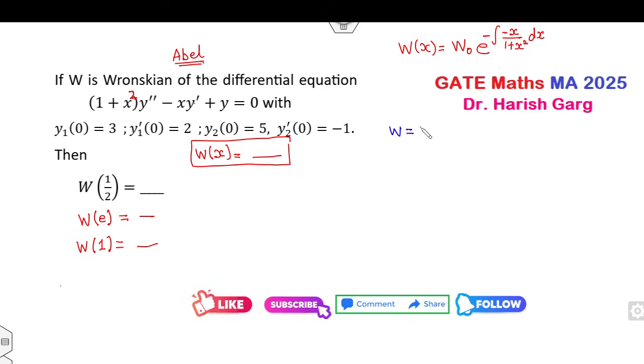So the answer of this problem is w0 e raised to power x divided by 1 plus x square. So I can multiply 2 and divide it by 2. So it will be half ln of 1 plus x square or log to the base 1 plus x square. So that will be w naught root of 1 plus x square.